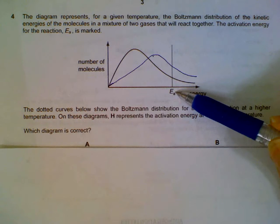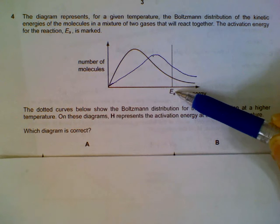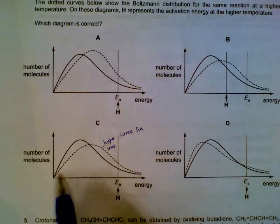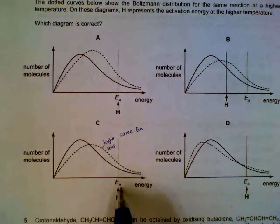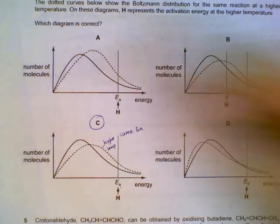Unless there's a catalyst involved, there's no change in activation energy. So higher temperature: the peak is on the right side and lower, and the activation energy remains unchanged. Option C.